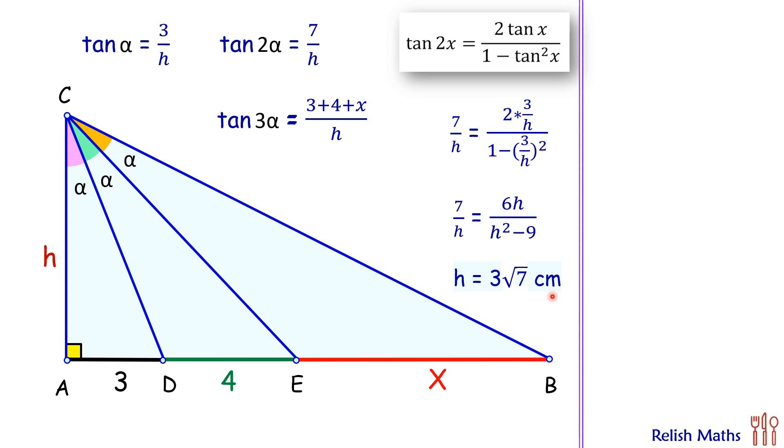Now let's look at the second formula, that is of tan 3x. In this tan 3x value, we can put this value 3 plus 4 plus x upon h, and tan 2x will be 7 by h, and tan x that will be 3 by h.